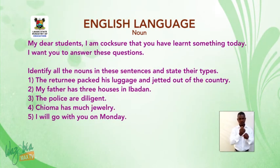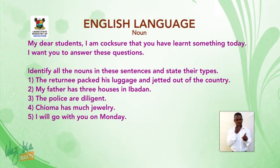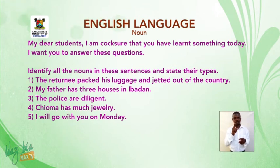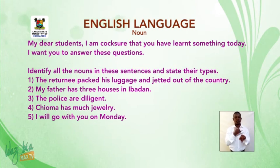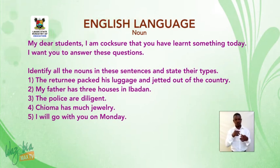My dear students, I'm sure that you have learned something today. I want you to answer these questions. Identify all the nouns in these sentences and state their types. One: 'The returning pack its luggage and jetted out of the country.' Two: 'My father has three houses in Ibadan.' Three: 'The police are diligent.' Four: 'Chioma has much jewelry.' Five: 'I will go with you on Monday.'